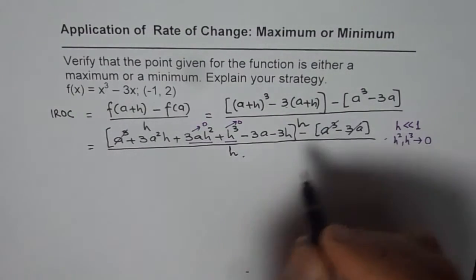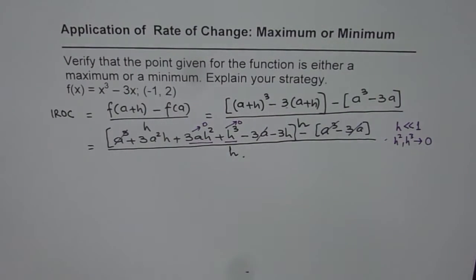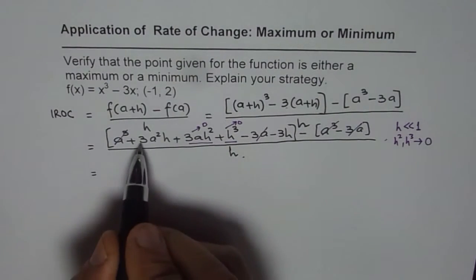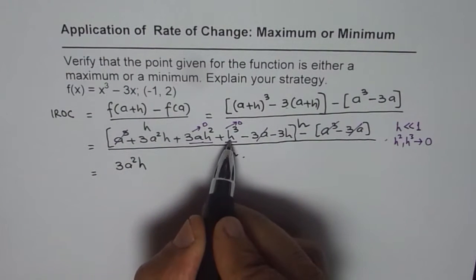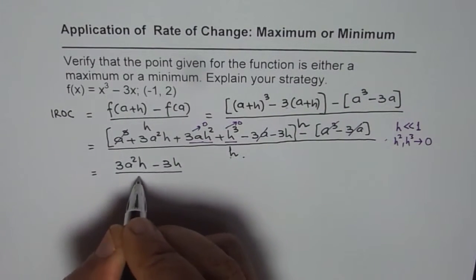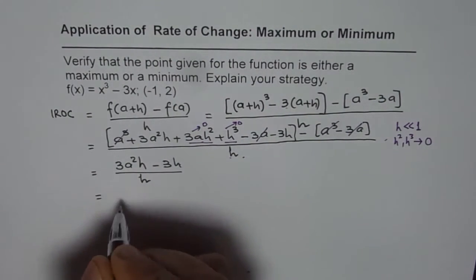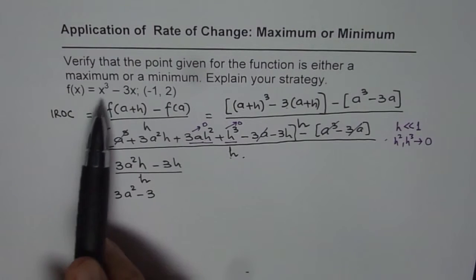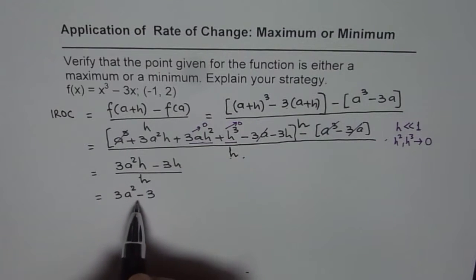We have 3a²h, the h³ term is approximately 0, minus 3h, all divided by h. So we can factor out h and, canceling h, we get 3a² - 3. So the instantaneous rate of change for the given function at any general point a is 3a² - 3.